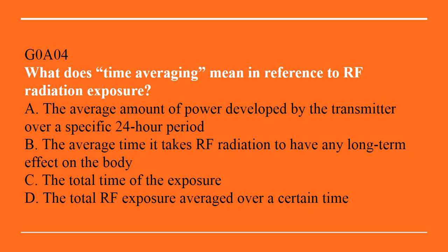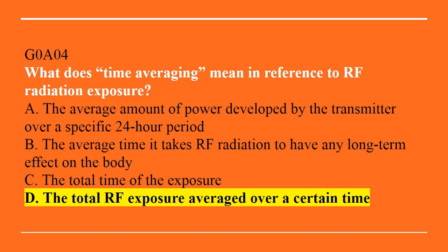G0A04: What does time averaging mean in reference to RF radiation exposure? A, the average amount of power developed by a transmitter over a specific 24-hour period. B, the average time it takes RF radiation to have any long-term effect on the body. C, the total time of exposure. Or D, the total RF exposure averaged over a certain time. Answer is D — the total RF exposure averaged over a certain time.